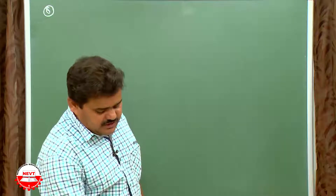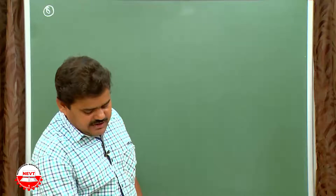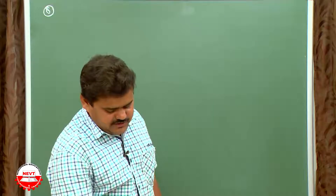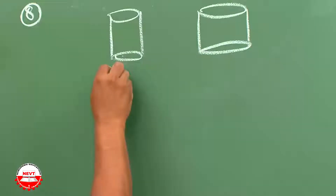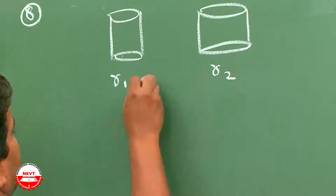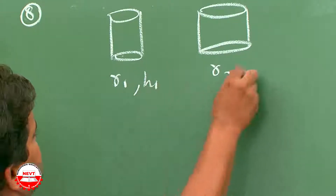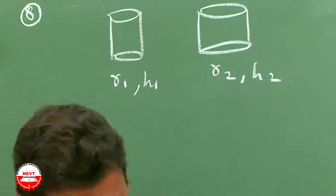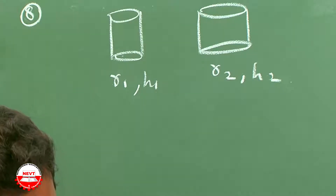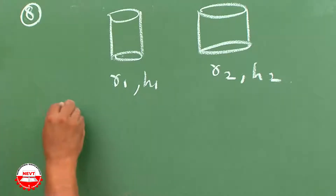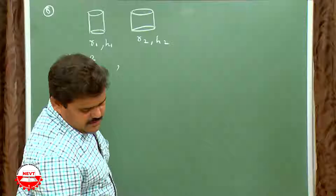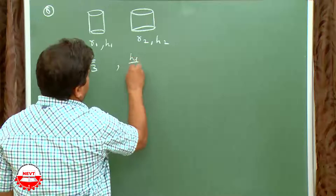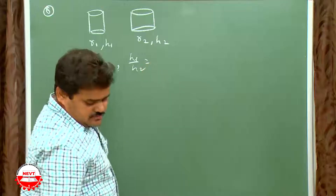Next question: the radii of two cylinders are in the ratio 2:3 and their heights are in the ratio 5:3. Calculate the ratio of their volumes and the ratio of their curved surface areas. Let R1, R2 be the radii and H1, H2 be the heights. So R1/R2 = 2/3 and H1/H2 = 5/3.